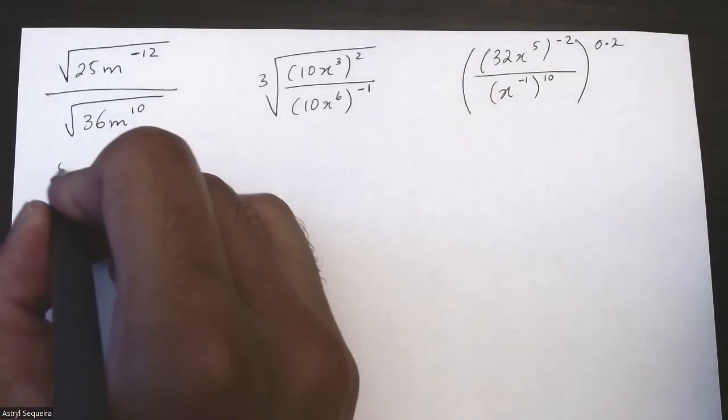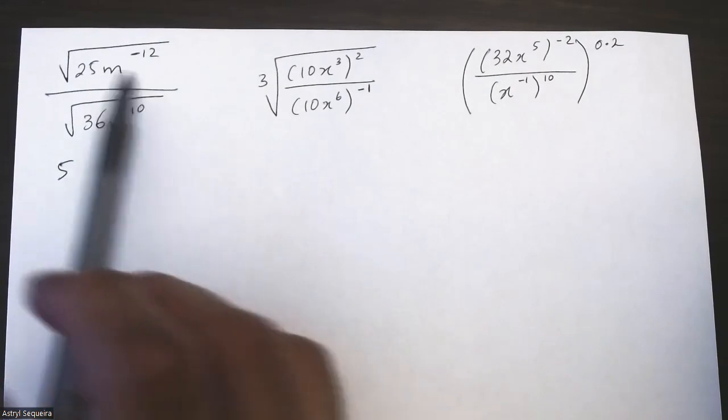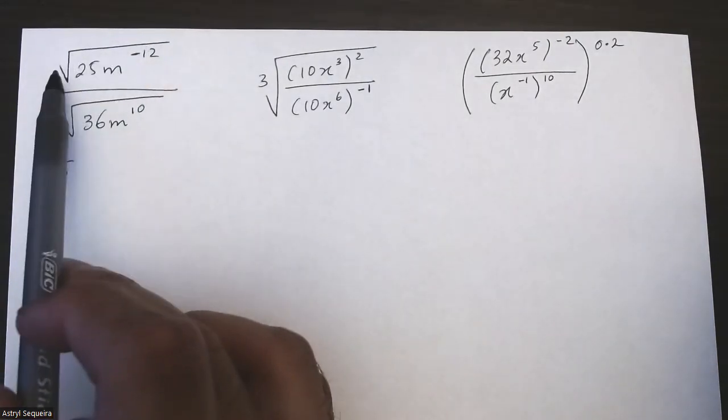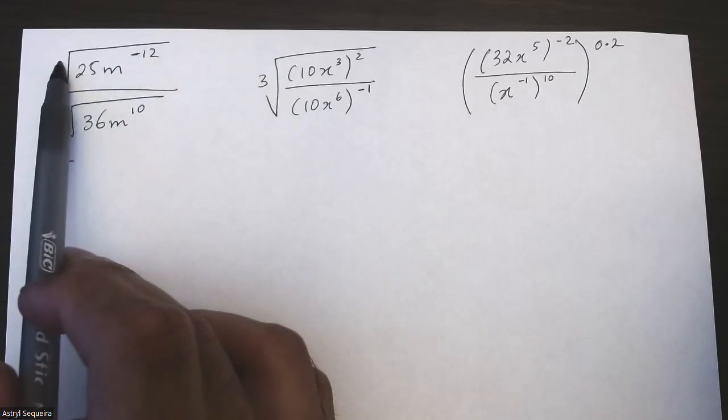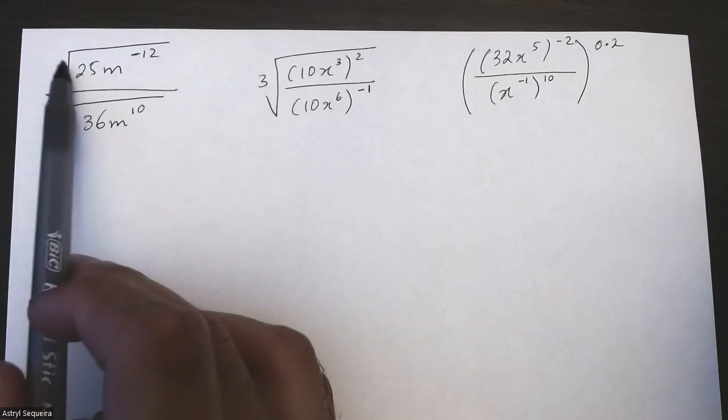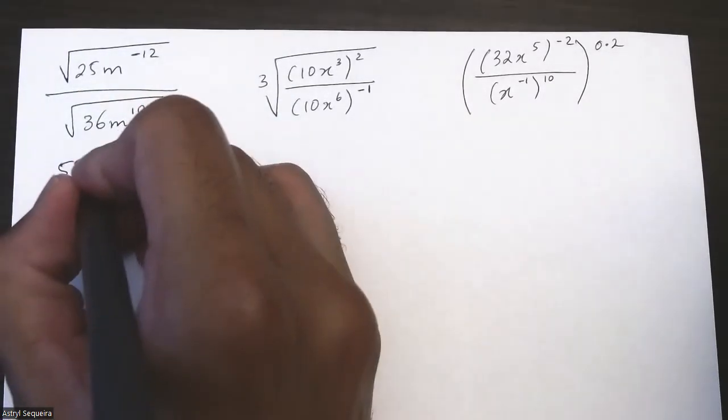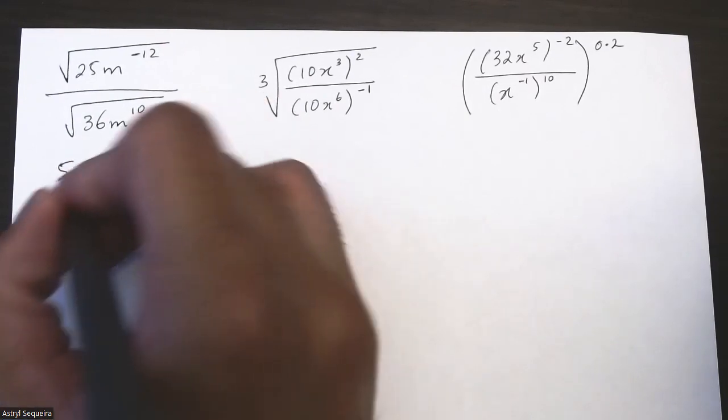And when I'm square rooting the exponent here, it basically means you're dividing the exponent by whatever's out here of the root. So in this case it's just a square root, so I'm just going to divide the exponent by 2. That's just going to become m to the negative 6.